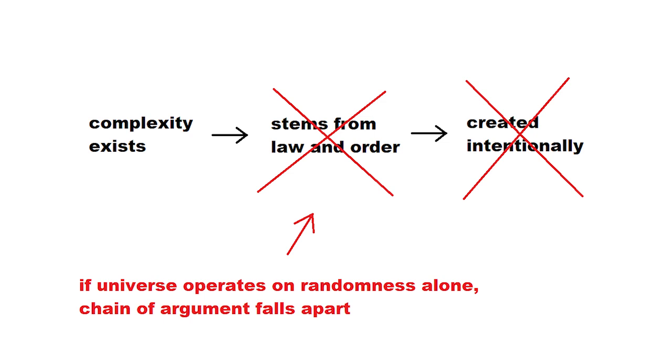One of the counters that has been used against this chain of argument before is the idea that the universe does not come from law and order, but rather evolved from pure randomness over billions of years.